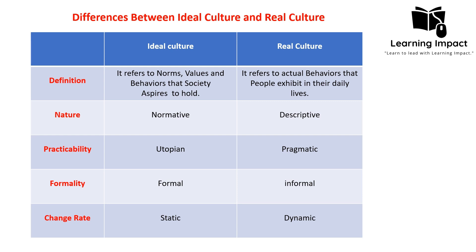Regarding practicability, ideal culture is considered utopian, which means it often reflects an idealized vision of how people should interact and behave. While real culture is pragmatic, which accounts for the practical realities of human behavior and interaction. Ideal culture is considered formal, as it is often represented in official documents, educational material, and